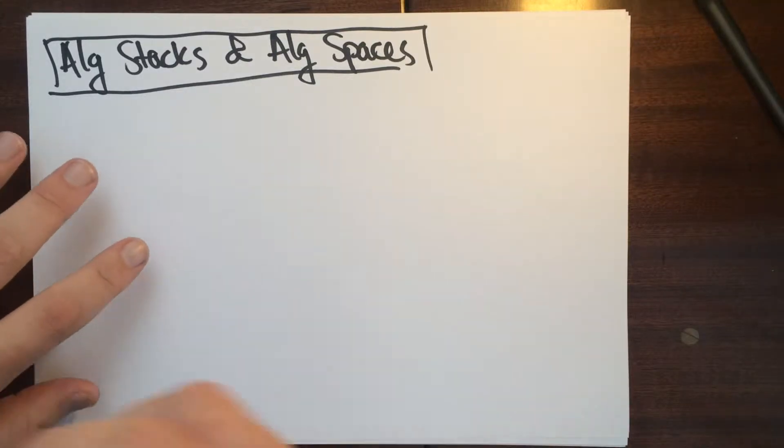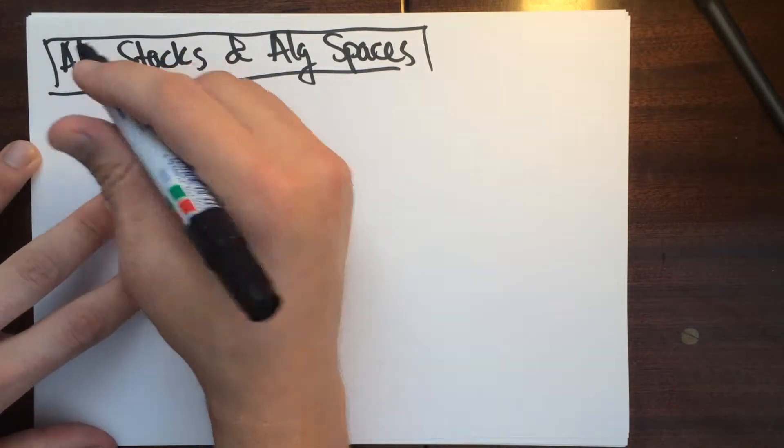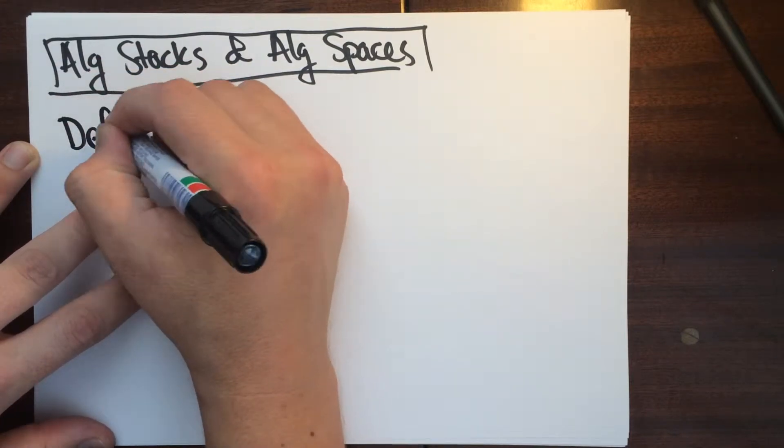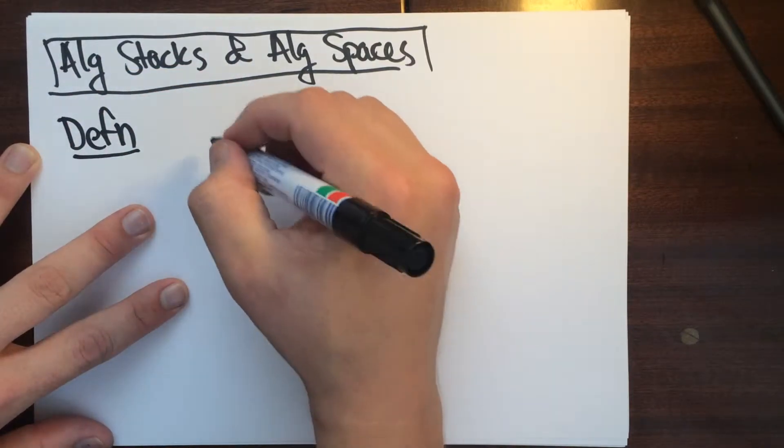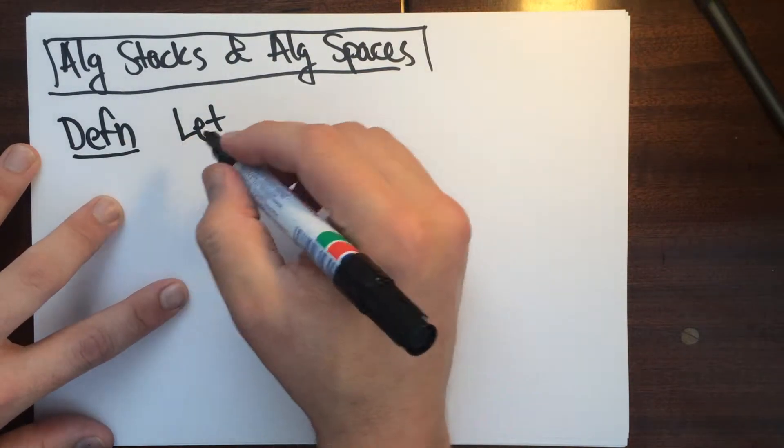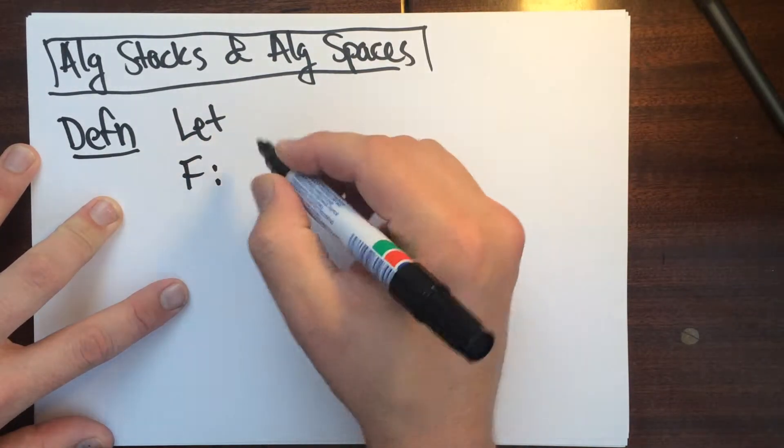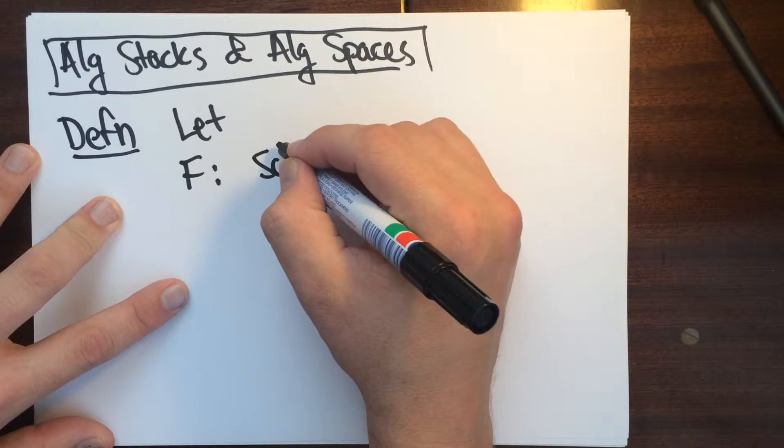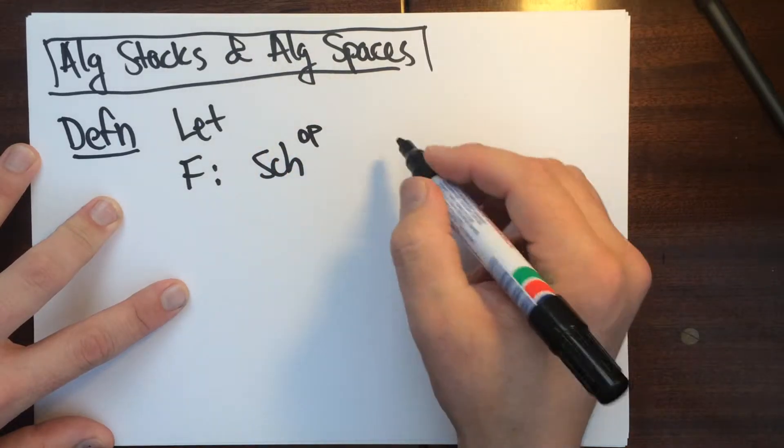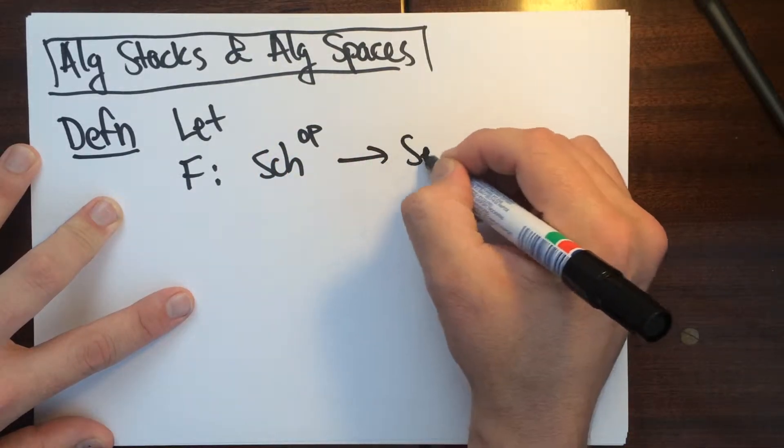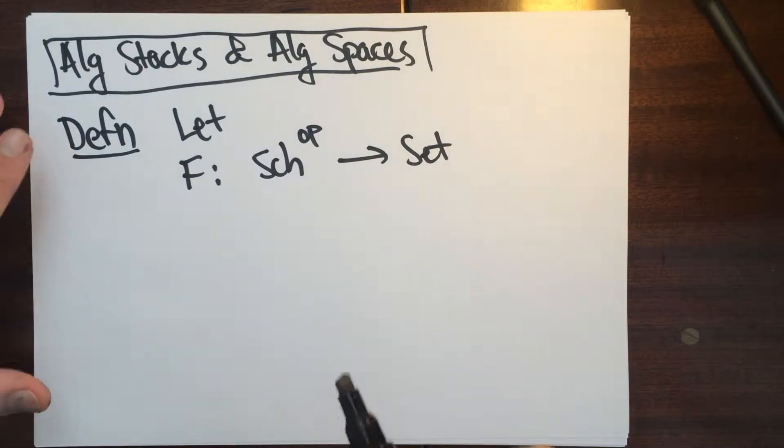Okay, well, so let me just, I just apparently I just started out with the definition. So definition. So let F be a functor from the opposite category of schemes to sets.